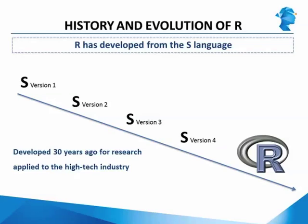R has essentially developed from the S language. S underwent several version changes from version 1 through to version 4. The fourth version of S was made available in 1998, and this is very close to the version still in use today. The S language was then purchased and its design frozen by a company called Insightful, which intended to make a commercial version called S-Plus — S plus a GUI — to make it more accessible to users.